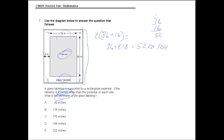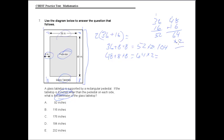Now we have to calculate the sum of these edges. So we have 48 plus 8 plus 8, that's 48 plus 16, which gives us 64. Then times 2 to duplicate this side, which gives us 128.